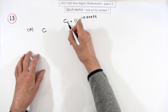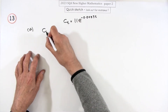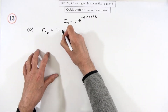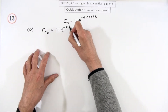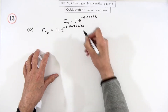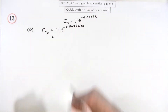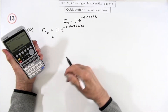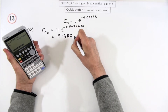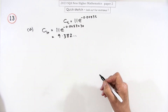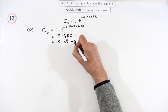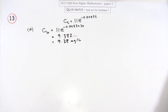So C of 30 — substituting t = 30 — will be 11e to the negative 0.0053 times 30. Press the button and that gives you 9.382, so we'll take that as 9.38 milligrams per liter for the one mark.